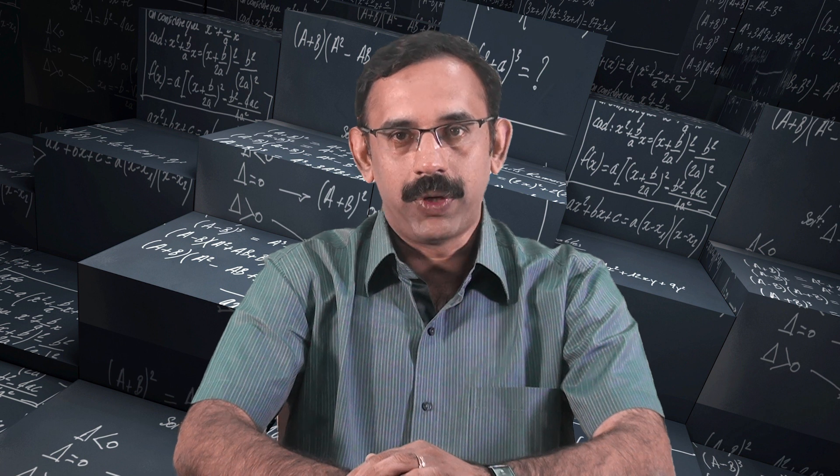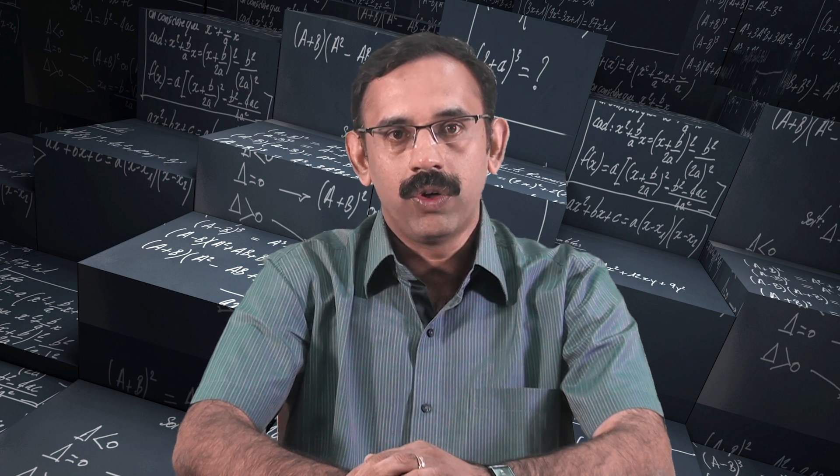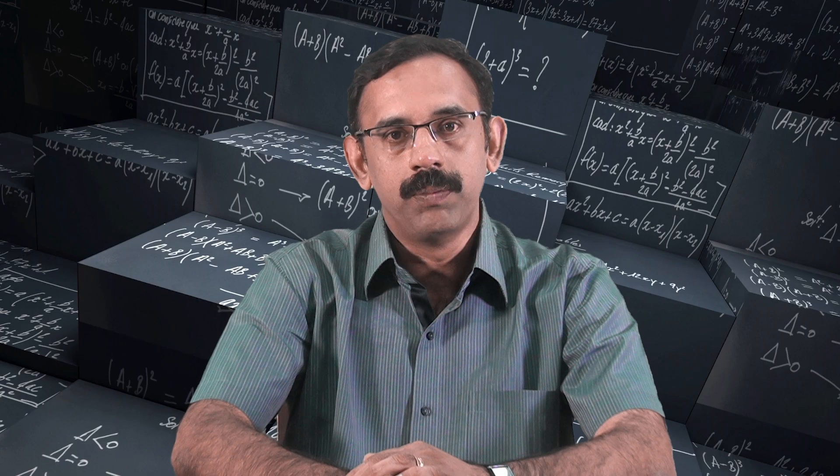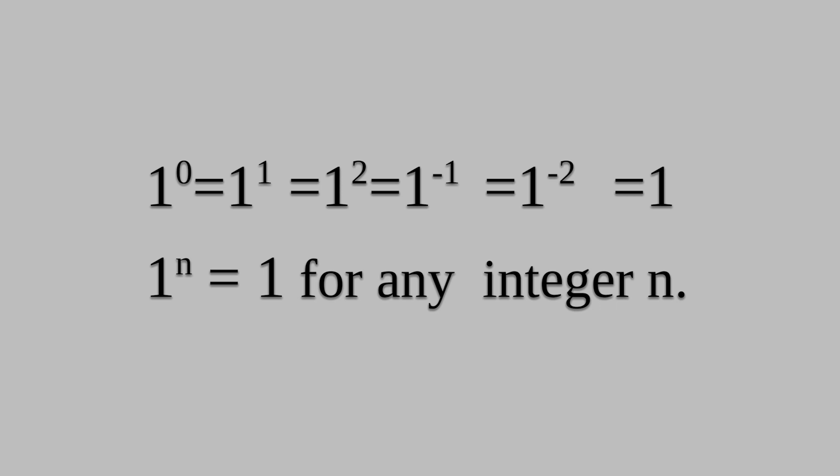About exponents, we already know that a raised to 0 equals 1 from the previous class. One can observe the following: 1 raised to 0 equals 1 raised to 1 equals 1 squared equals 1 raised to minus 1 equals 1 raised to minus 2, and all are equal to 1. Hence, we can say that 1 raised to n is equal to 1 for any integer n.